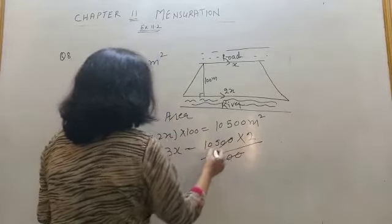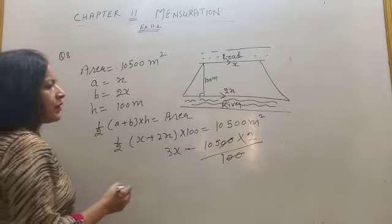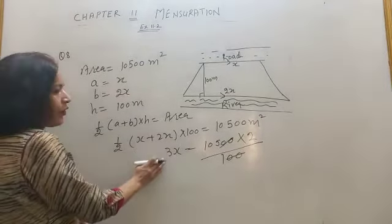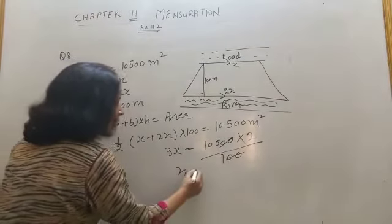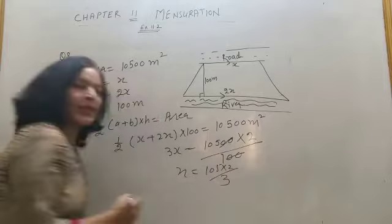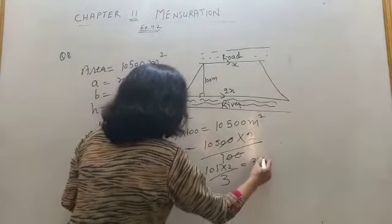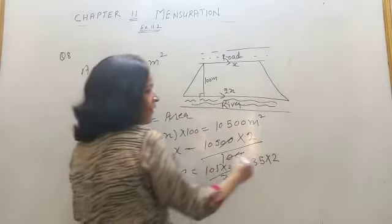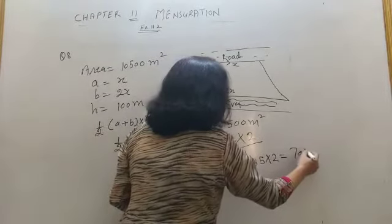So 2, 0 cancel with 2, 0. And if I have to isolate x, then x will be 105 into 2 upon 3. So it will cancel to give 70 meter.